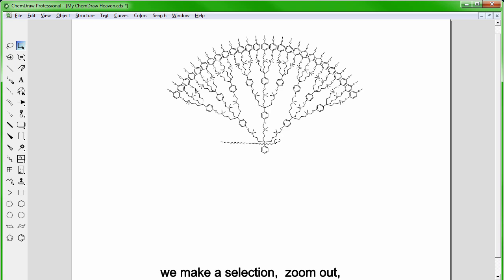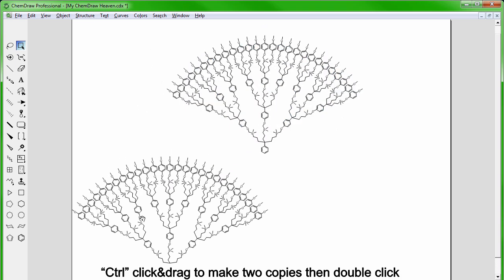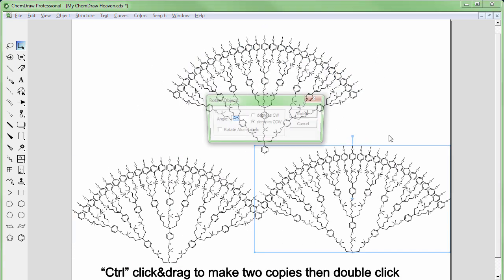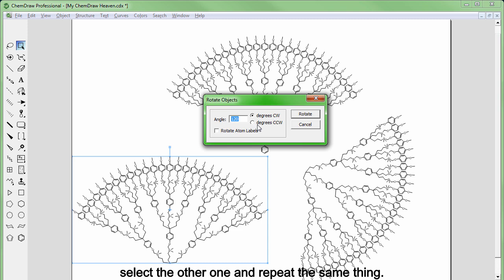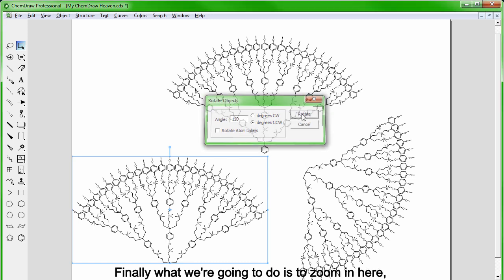We make a selection, zoom out, CTRL-click and drag to make two copies then double click on the rotation handle or CTRL-R and rotate by 120 degrees, select the other one and repeat the same thing.